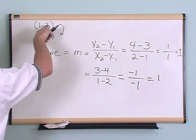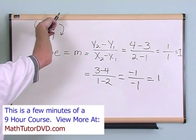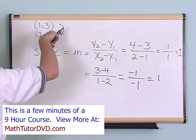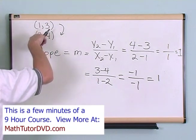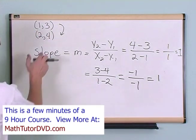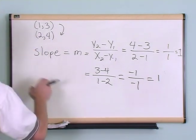It doesn't matter if you start subtracting 3 minus 4 from this point subtract to this point as long as you do it the same on the x. Again, you can go the other way. 4 minus 3 as long as you make it 2 minus 1.